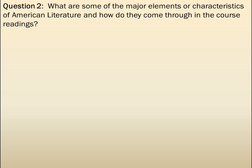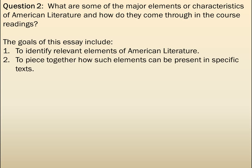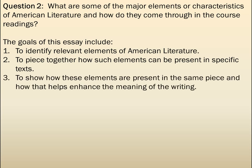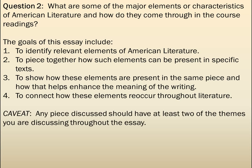Question two asks: what are some of the major elements or characteristics of American literature, and how do they come through in the course readings? The goals of this essay include identifying relevant elements of American literature, piecing together how such elements are present in specific texts, showing how these elements appear in the same piece and enhance the meaning of the writing, and connecting how these elements recur throughout American literature. You're identifying major traits and characteristics of American literature, then moving through a variety of course writings to identify where and how they come up.